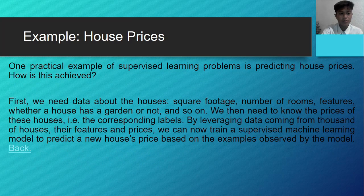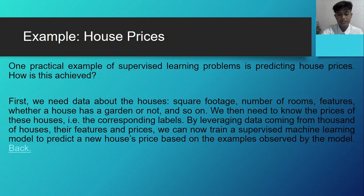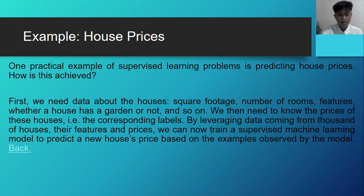One practical example of supervised learning problems is predicting house price. How is this achieved? First, we need data about the houses — square footage, number of rooms, features, whether a house has a garden or not, and so on. We then need to know the prices of these houses, the corresponding labels. By liberating data coming from thousands of houses, their features and prices, we can now train supervised machine learning models to predict a new house price based on the examples observed by the model.